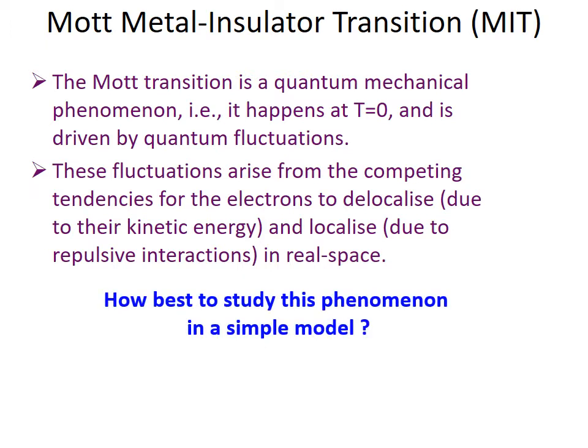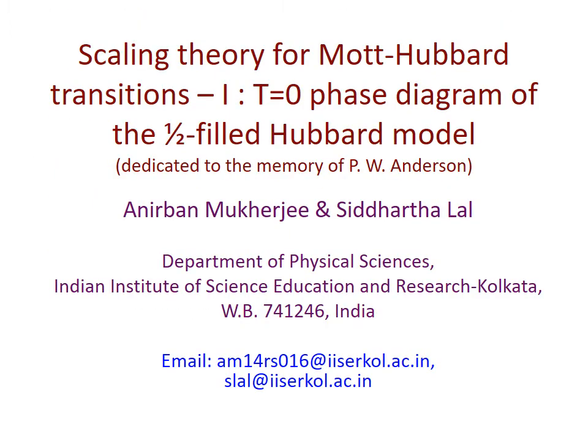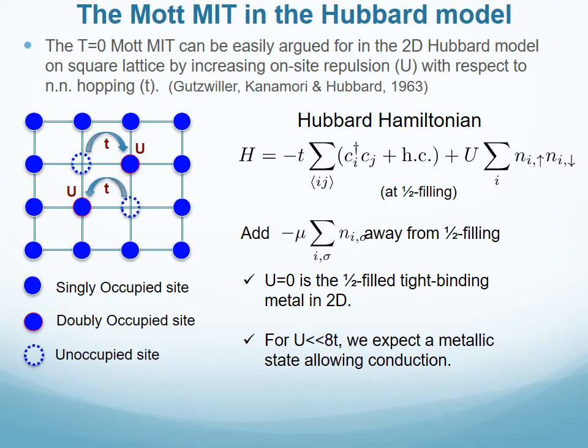The important question is: how best to study this phenomenon in a simple model? The first work deals with the Mott transition in the Hubbard model. The zero-temperature Mott transition can be easily argued for in the 2D Hubbard model on the square lattice. This model was introduced by Gutzwiller, Kanamori and Hubbard separately in 1963.